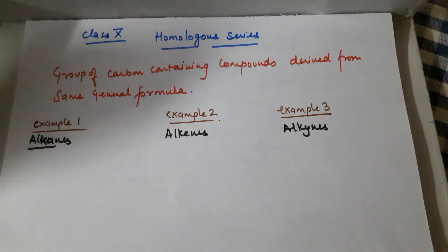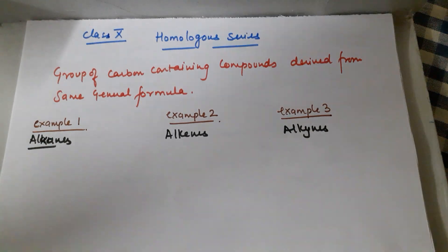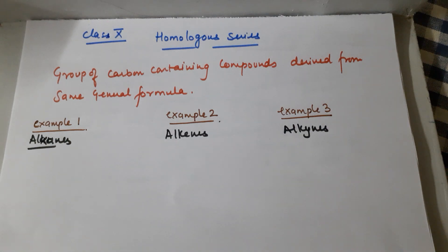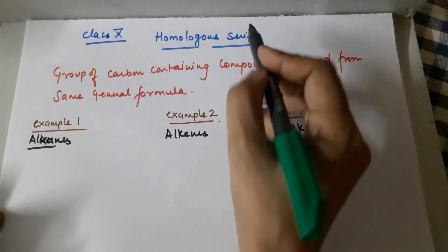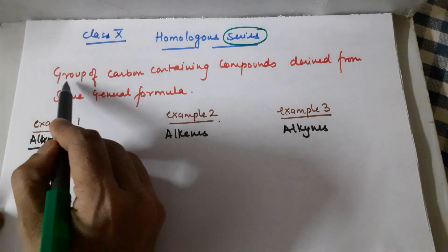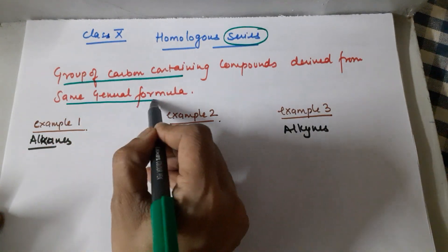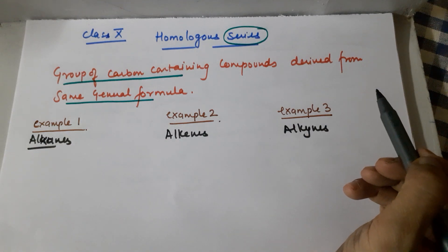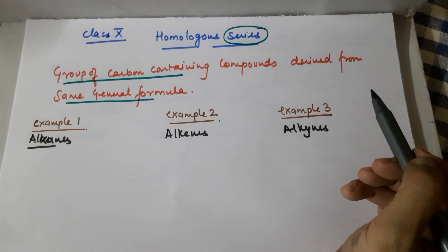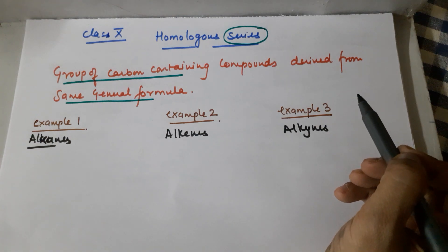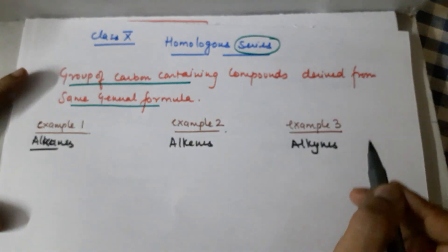Good morning, class 10. Welcome to the next class on the chapter Carbon and Its Compounds. This is one of the important chapters as it forms the base of organic chemistry in class 11th and 12th. The topic we are doing today is homologous series. A series means it is a group of compounds — specifically, a group of carbon compounds derived from the same general formula. I am talking about hydrocarbons only.